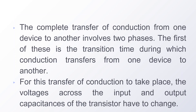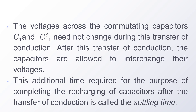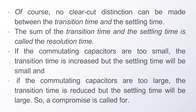The complete transfer of conduction from one device to another involves two phases. The first is the transition time, during which conduction transfers from one device to another. For this transfer to take place, the voltages across the input and output capacitors of the transistor have to change. The voltages across the commutating capacitors C1 and C1' do not change during this transfer. After the transfer of conduction, the capacitors are allowed to interchange voltages. This additional time required for completing the recharging of capacitors is called the settling time. The sum of the transition time and the settling time is called the resolution time.